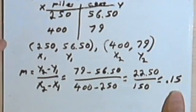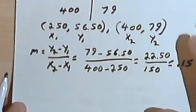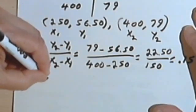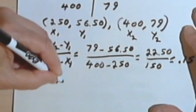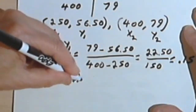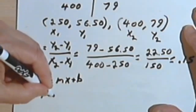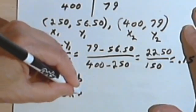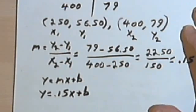Or in other words, that's how much you're paying - you're paying 15 cents per mile. So I can write part of the equation. If I want to think of it as y equals mx plus b, I can write y equals 0.15x plus b.